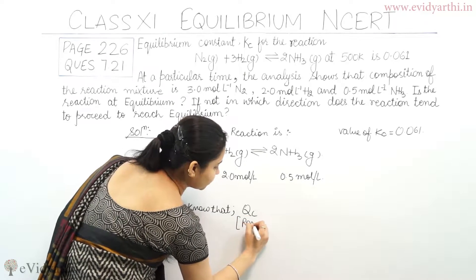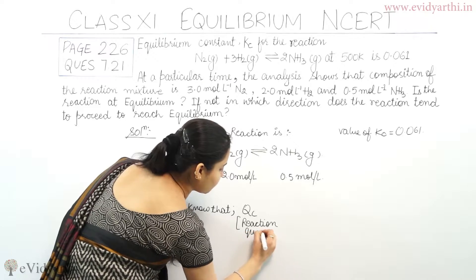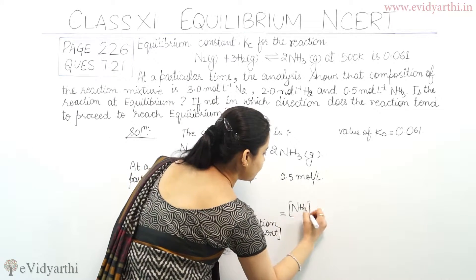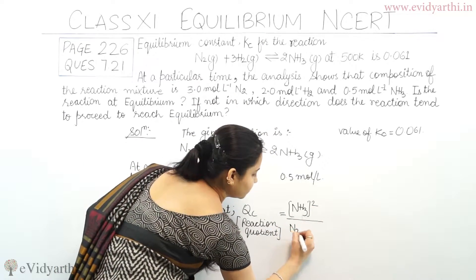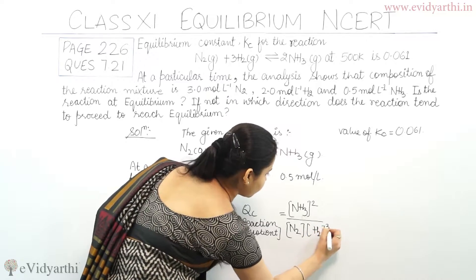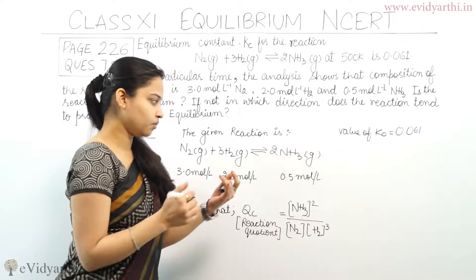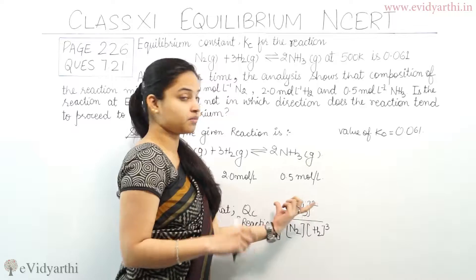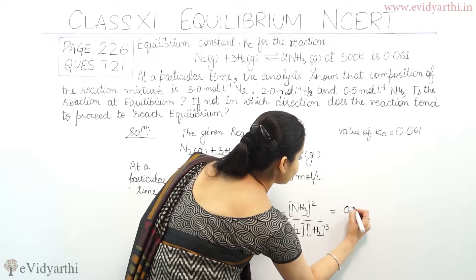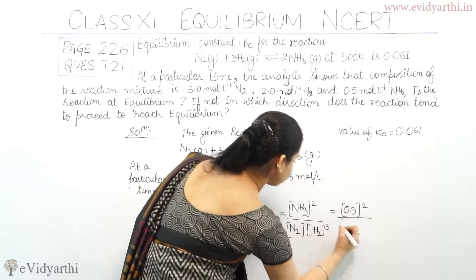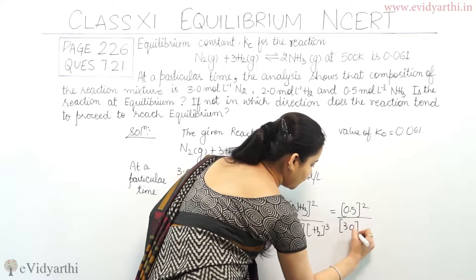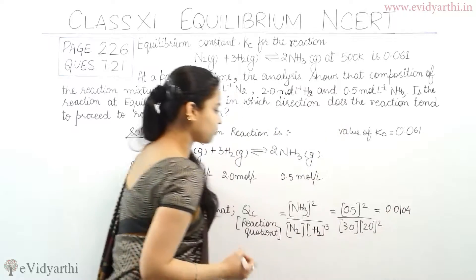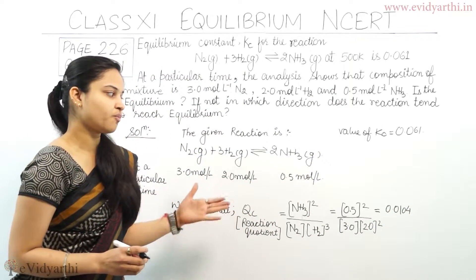Now we calculate Qc, the reaction quotient. Qc is equal to [NH3]² divided by [N2] multiplied by [H2]³. Placing the concentration values: Qc = (0.5)² divided by (3.0) × (2.0)³. So the answer you get is Qc = 0.0104. The reaction quotient for this reaction is 0.0104.